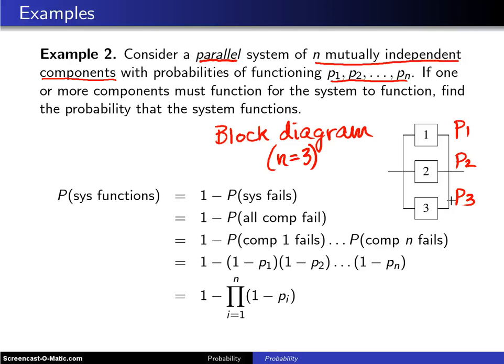So to calculate the probability that the system functions, it is easiest to say this is one minus the probability that the system fails.